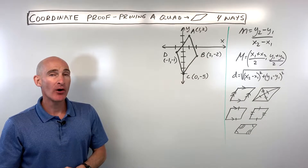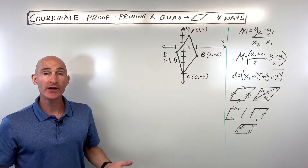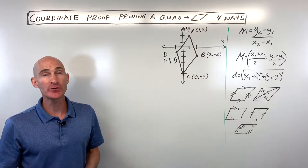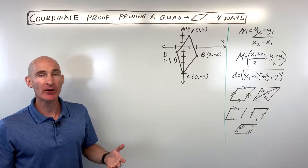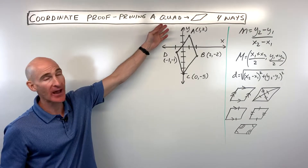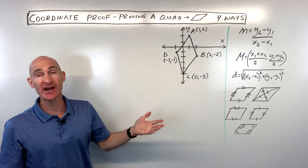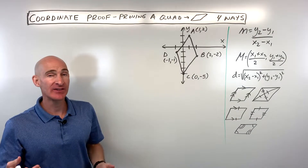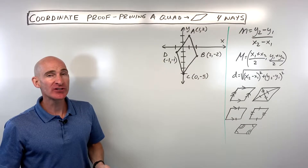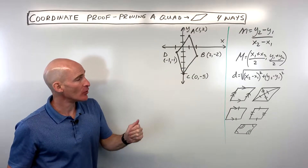In this video we're going to talk about coordinate proofs in geometry, and more specifically we're going to talk about how to prove that a quadrilateral, a four-sided figure, is a parallelogram. So let's dive into this video.